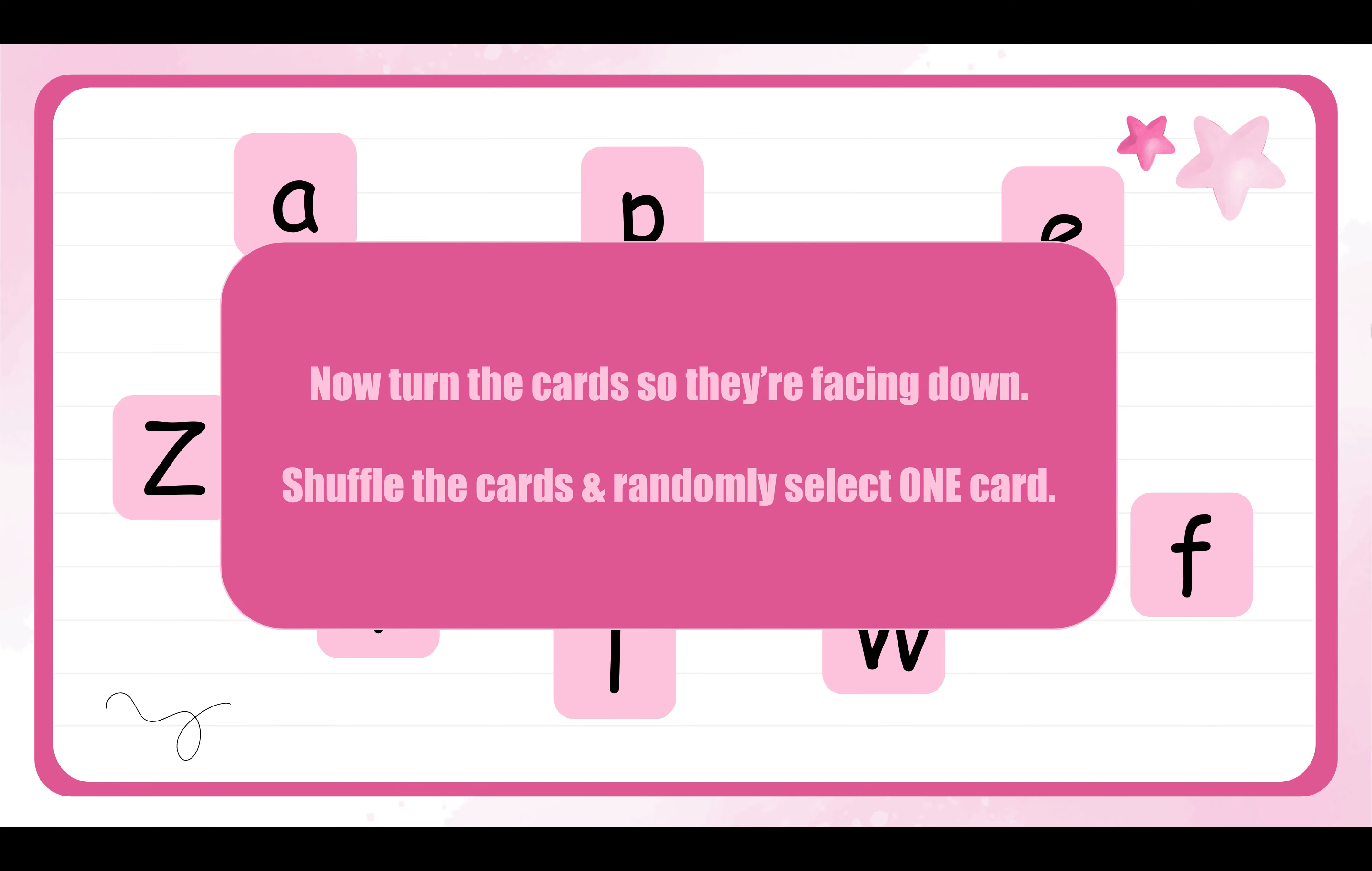Now we're going to turn the cards so they're facing downward so that we can't see what the letters are. We're going to shuffle the cards and randomly select one card.